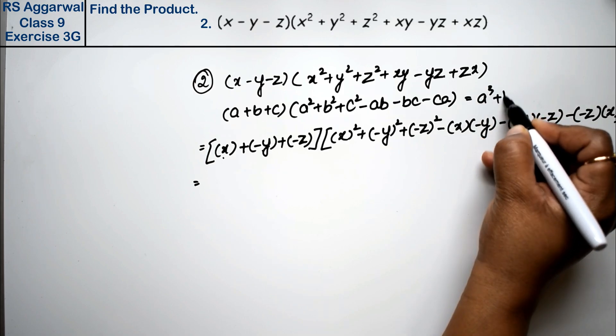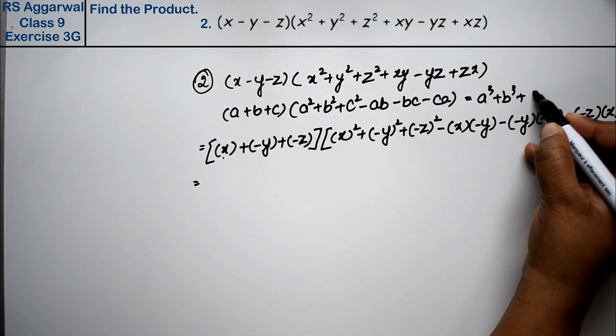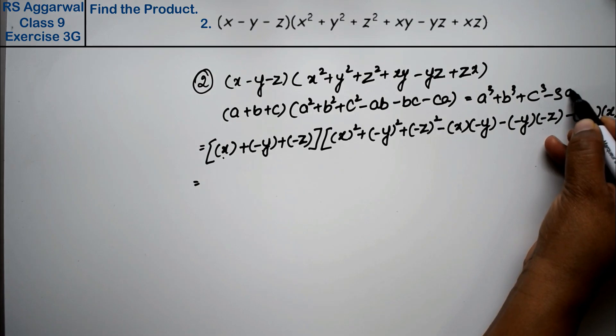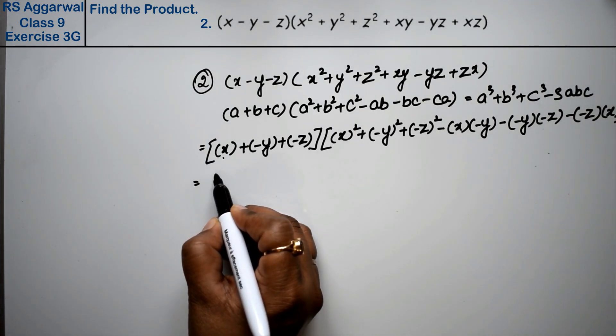This is our formula: a³ + b³ + c³ - 3abc. So what is our formula?